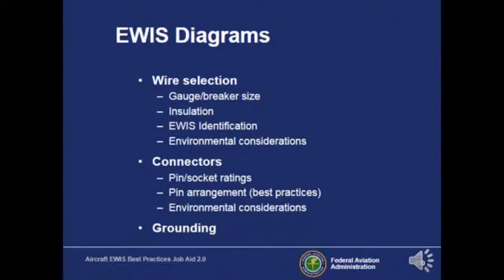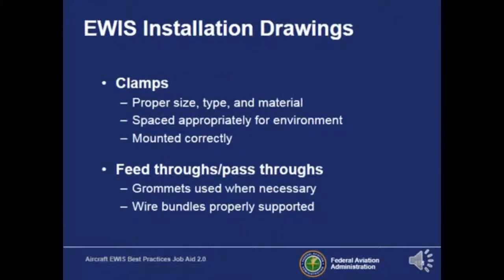When you look at your wiring diagram, make sure you understand what the diagram is saying — it tells you a lot about wire selection, the different kinds of connectors, what wires are going into the connectors, and grounding points. You can check out the wiring diagram on your Bombardier Navigator or online at iflybombardier.com. Installation drawings should address clamps, routing, and feed-throughs.